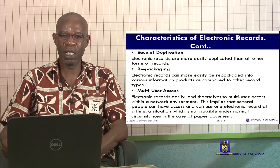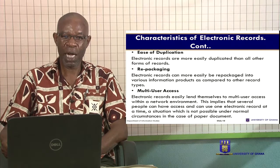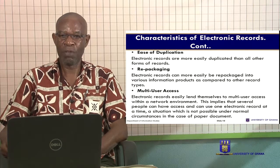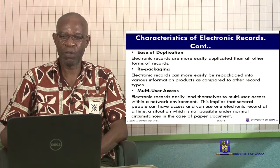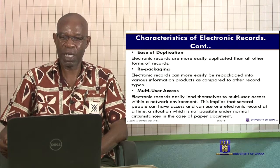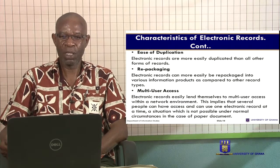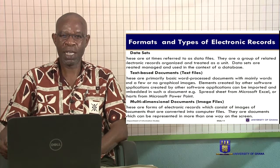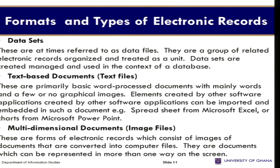Repackaging: Electronic records can more easily be repackaged into various information products as compared to other types of records. Multi-user access: Electronic records easily lend themselves to multi-user access within a network environment. You sit in a smart classroom, you have the university database, and even if there are 30 of you in that classroom, you can access information from the same network or database — there's no queue. Data sets, at times referred to as data files, are a group of related electronic formats and types of electronic records, created, managed and used in the context of a database.